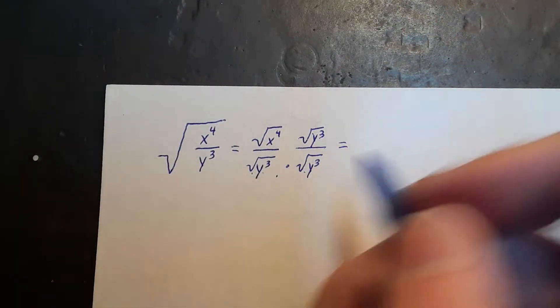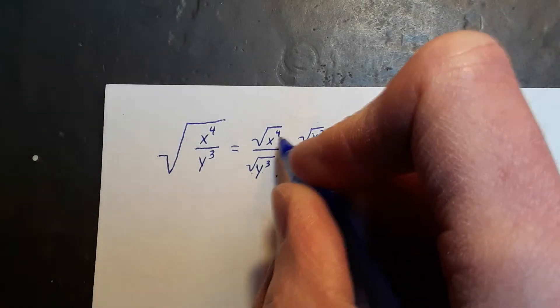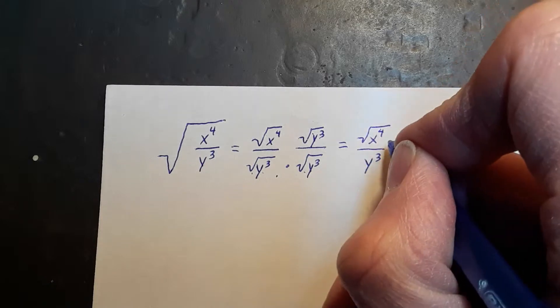So these two things multiplied together will give us y cubed. And then I can bring these together under the square root sign.